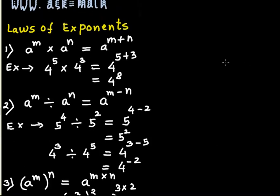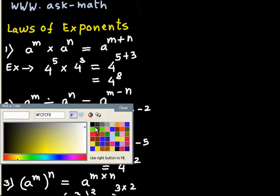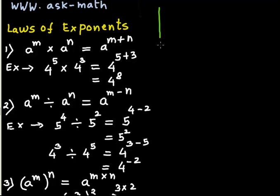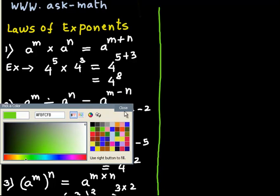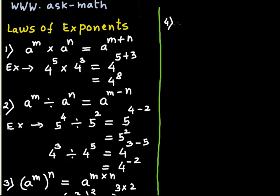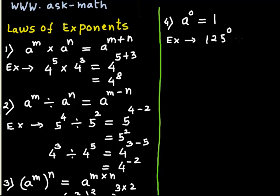The next law is the zero exponent law. Any number with exponent 0 has a value of 1. For example, 125 to the exponent 0 equals 1.